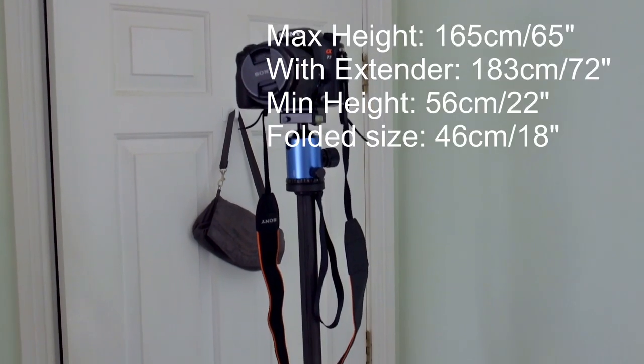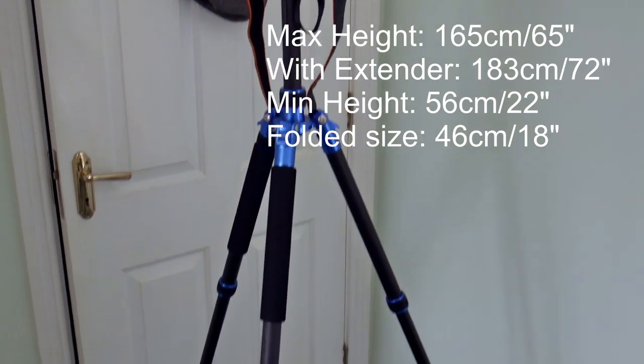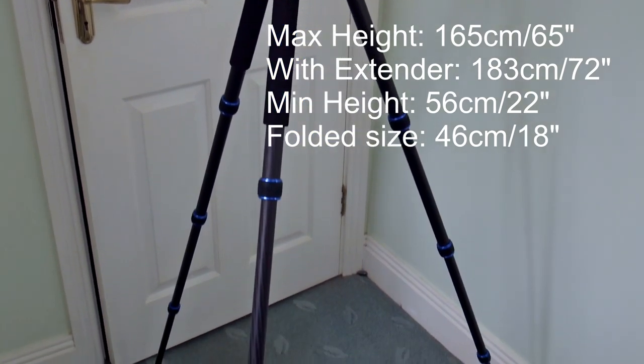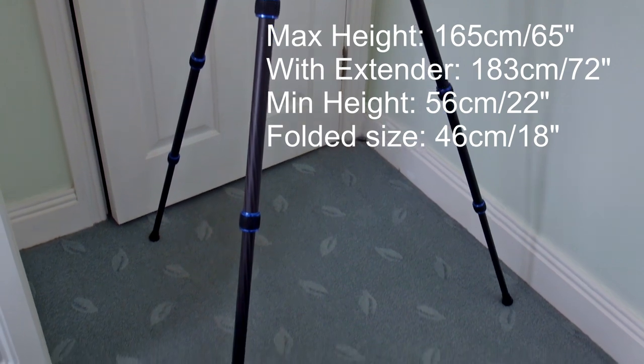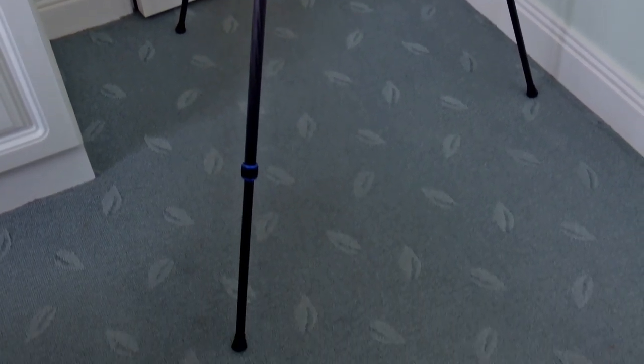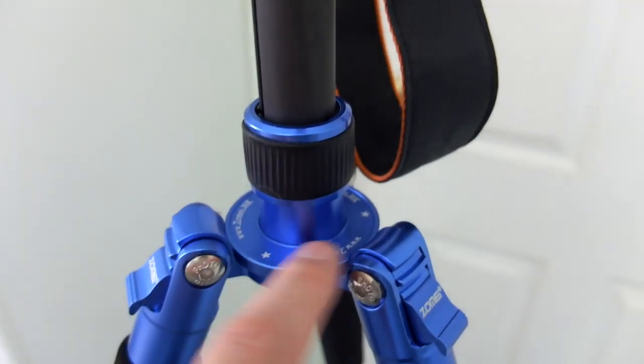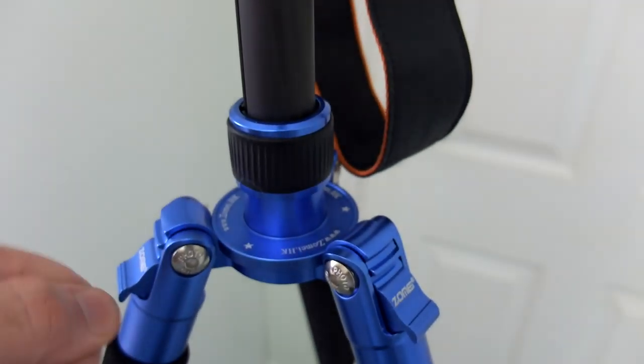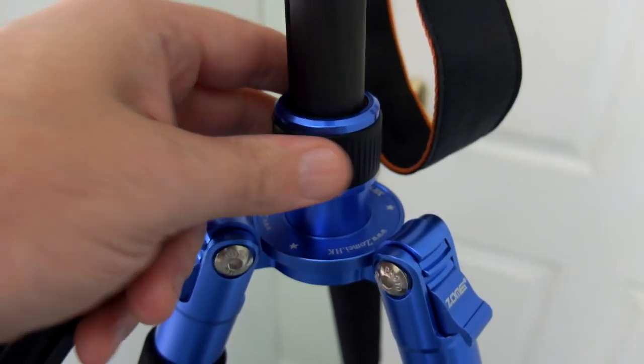Here is the tripod extended to the full size. That is around about 165 centimeters or 65 inches. That's without the extender on. With the extender column, it's 72 inches and 183 centimeters in height.